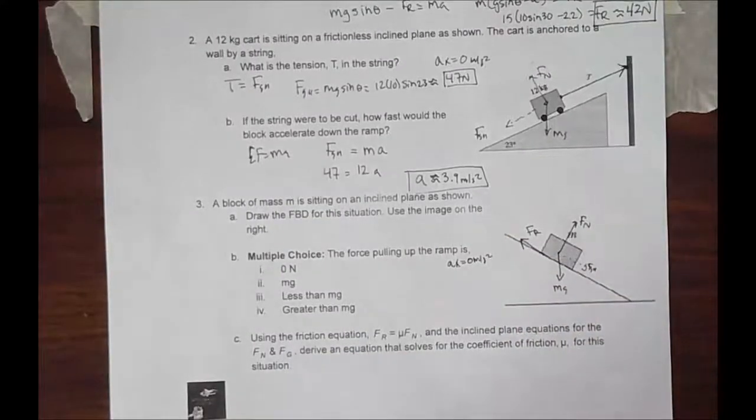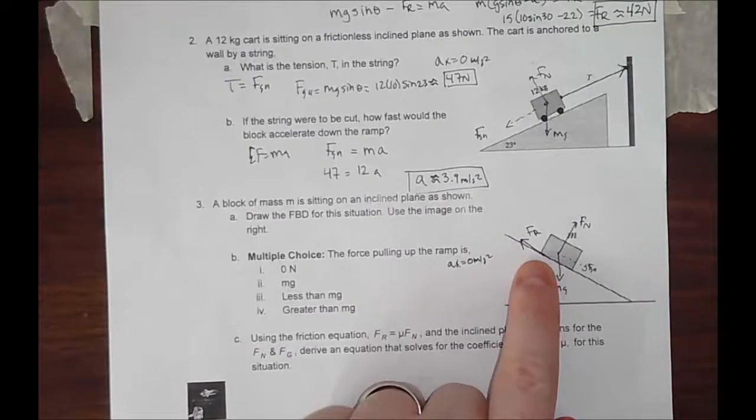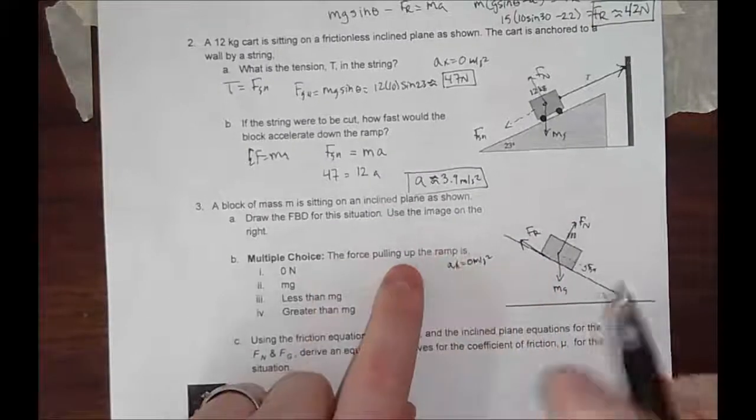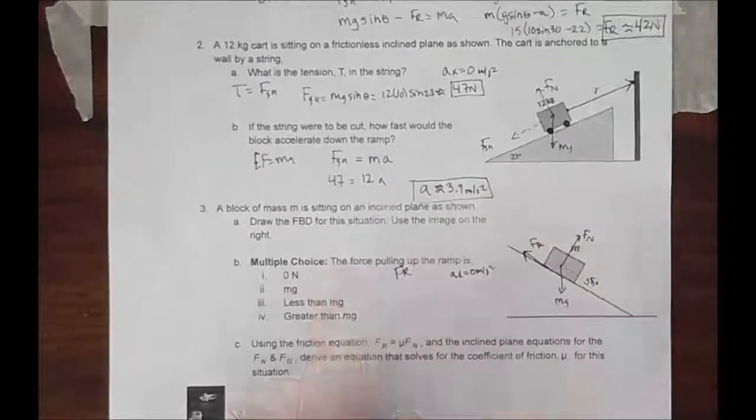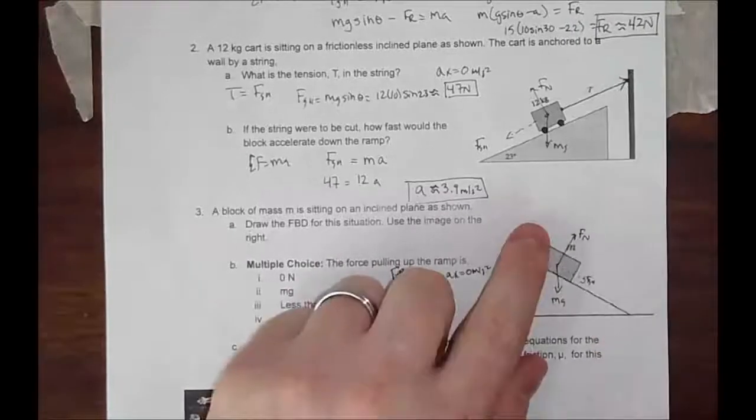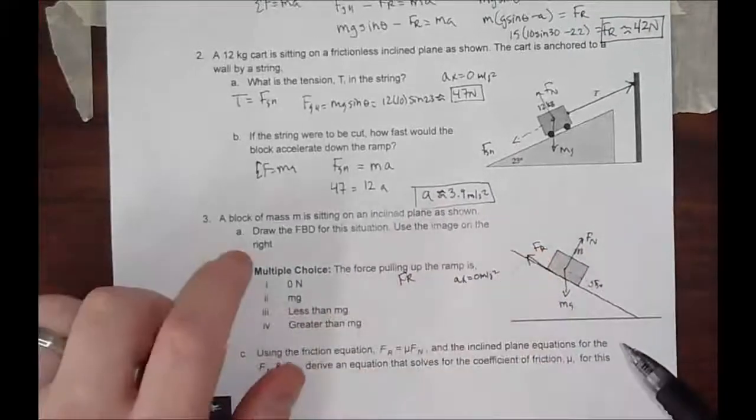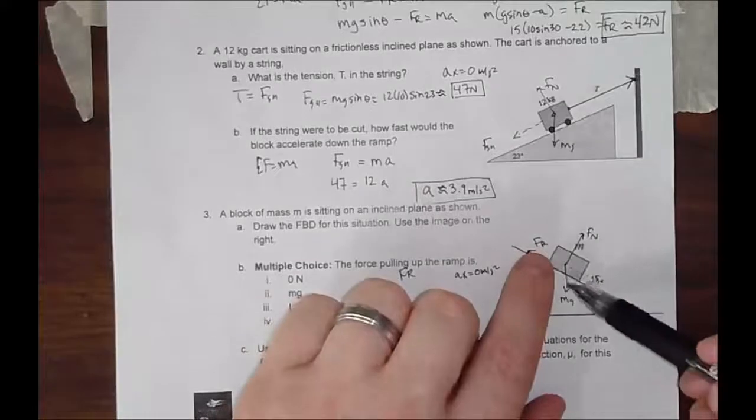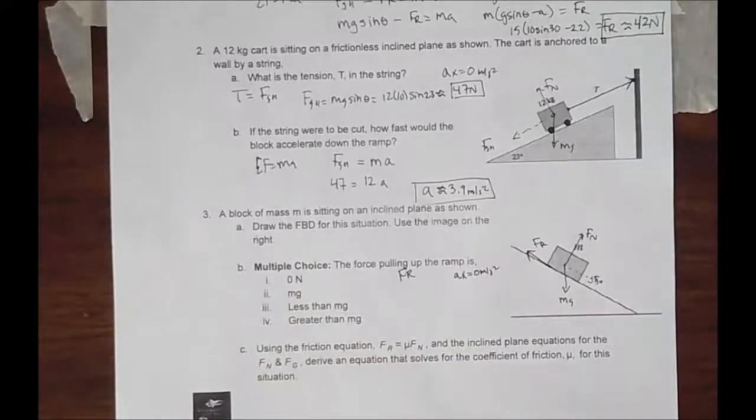What that means is, if this force pulling up the ramp is zero, so the only force pulling up the ramp in this case is the frictional force. If this is zero, then therefore the component will cause it to accelerate downwards. So it cannot be that.